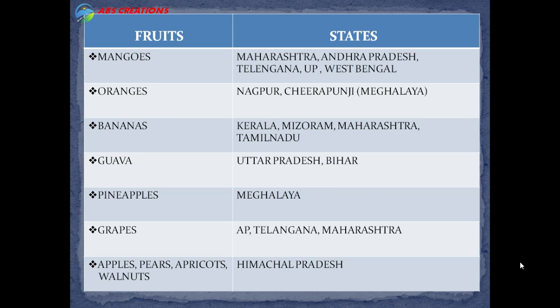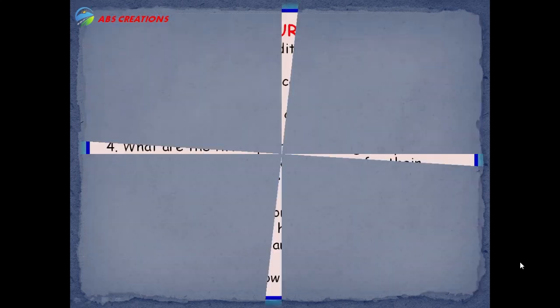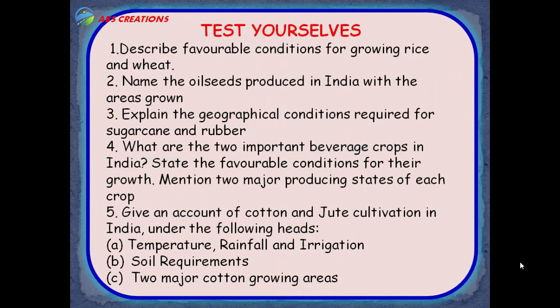I hope you have understood this concept clearly. Test yourself by reading these questions: Describe the favorable conditions for growing rice and wheat. Name the oil seeds produced in India with areas grown. Explain the geographical conditions required for sugarcane and rubber. What are the two important beverage crops in India — state the favorable conditions for their growth and mention two major producing states of each. Give an account of cotton and jute cultivation in India under the following heads: temperature, rainfall and irrigation, soil requirements, and two major cotton-growing areas. I hope this video will be useful for you. In the description box I have given two videos of agriculture covering farming types as well as cropping seasons and cropping patterns for your reference.